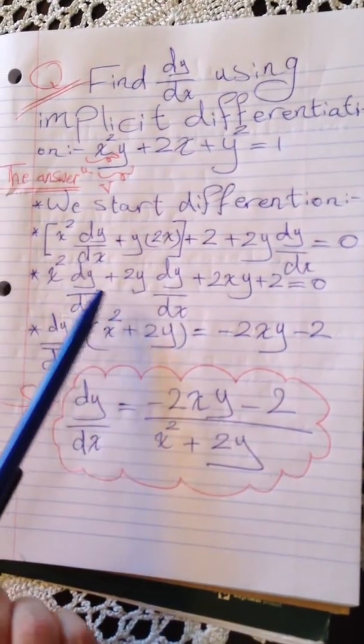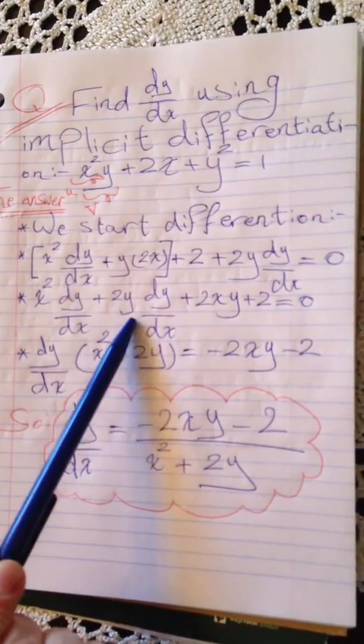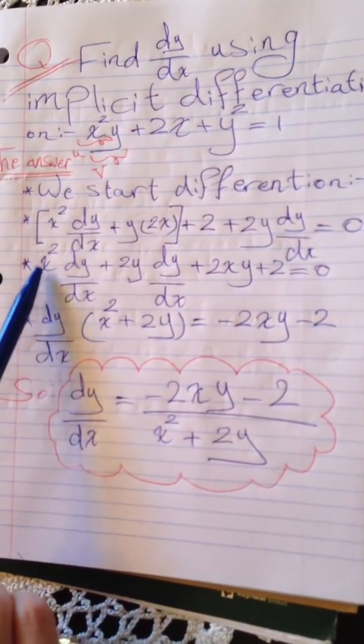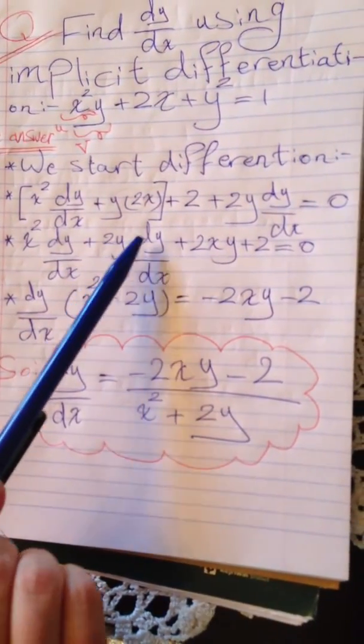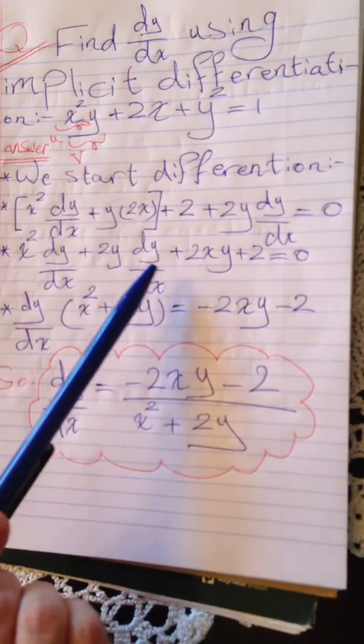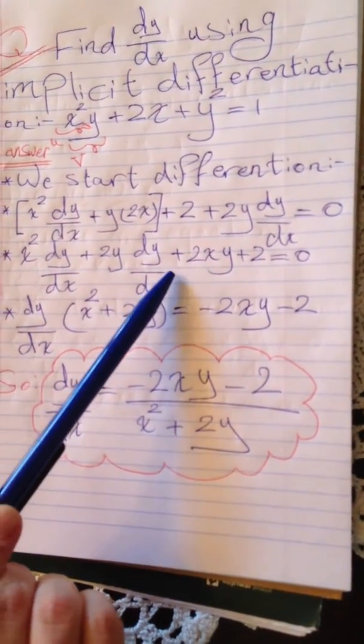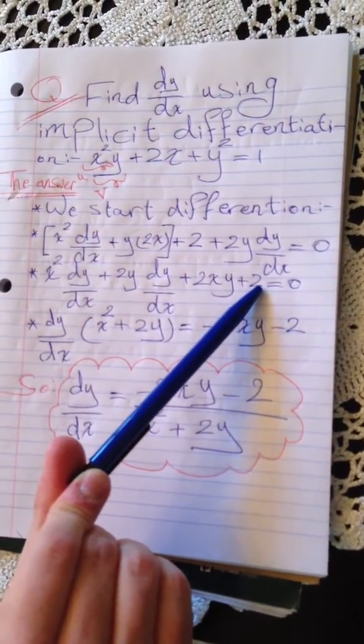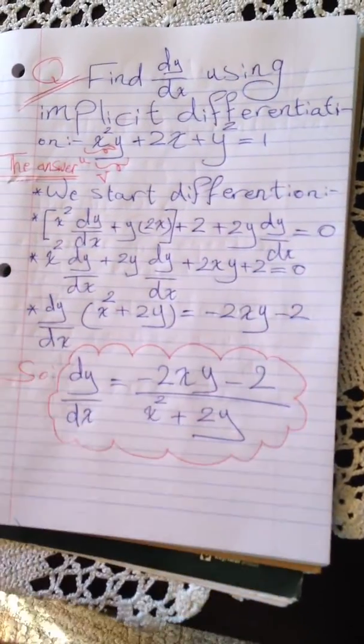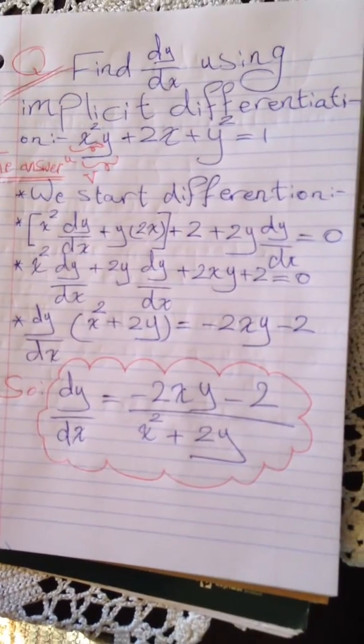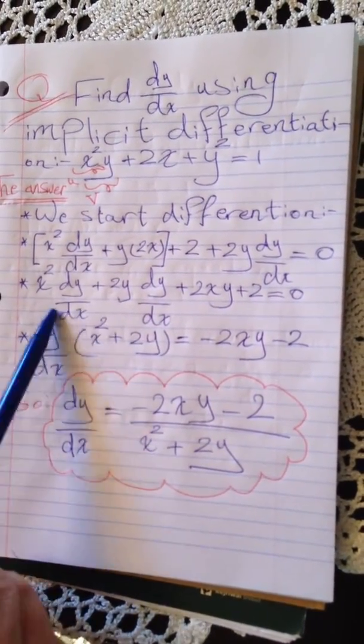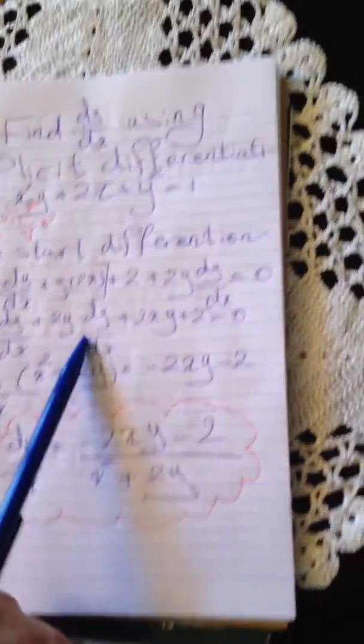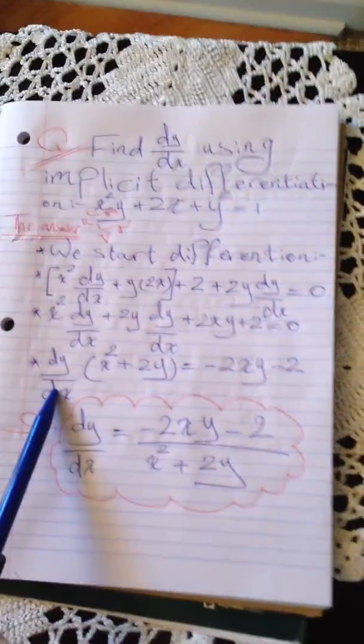The rest of the equation is 2xy plus 2 equals zero. Now we have a common factor here, which is dy/dx.